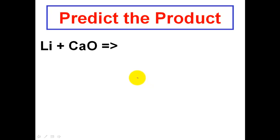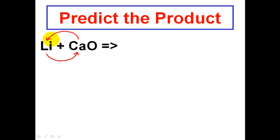Now I'm going to look at a single replacement reaction. Let's predict the products. Lithium is going to replace calcium. Lithium is a very active metal — we learned in a previous lesson that the higher in the activity series you are, the more active a metal you are. Lithium is definitely more active than calcium, so calcium and lithium are going to trade places. All the subscripts stay on the left-hand side in the reactants; when you make products, you make brand-new subscripts.